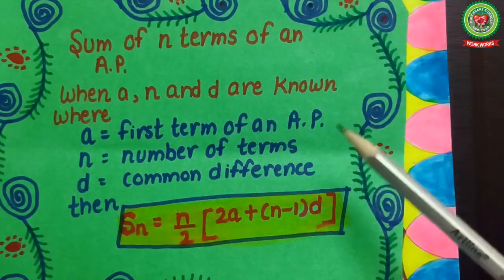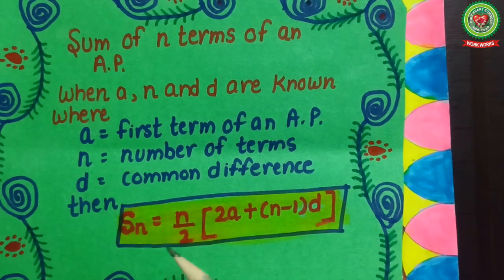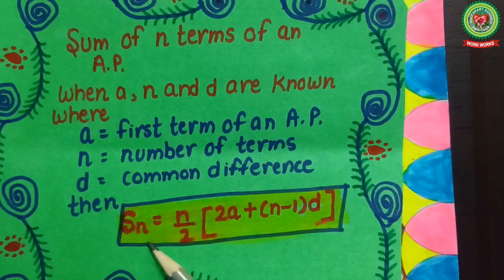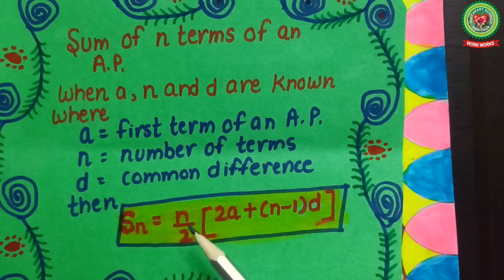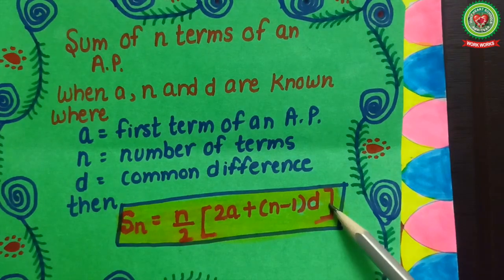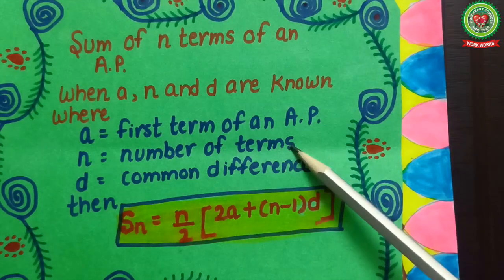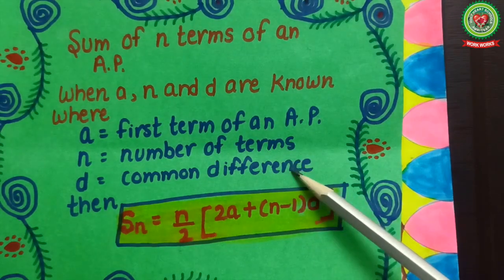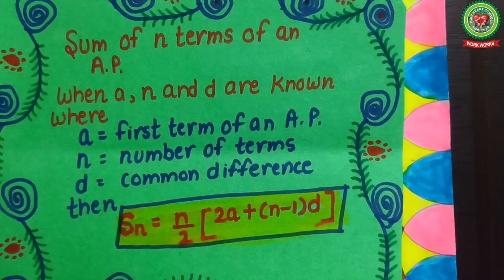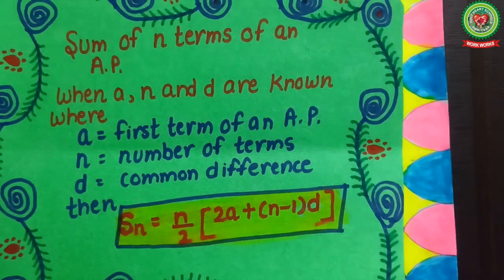As you have already done this type, we will recall the formula. The sum of N terms of an AP is equal to n/2 × (2a + (n−1) × d), where a stands for the first term of the AP, n stands for the number of terms, and d stands for the common difference. Now we will recapitulate this formula with practice.